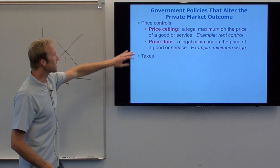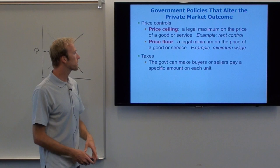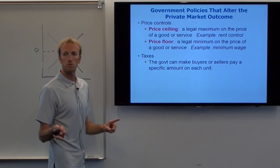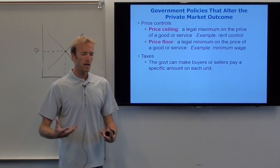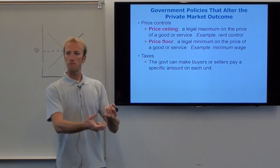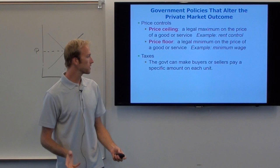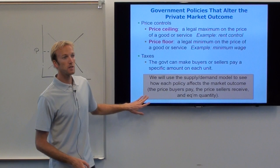The third way the government can get involved is through taxes. The government can make buyers or sellers pay a specific amount on each unit sold. If we remember back to our ShamWow example — we show up to the flea market and want to buy a ShamWow — maybe I buy it for $5, but then I have to pay like 50 cents or a dollar to the government as tax. Let's use the supply-demand model from Chapter 4 to figure out what happens with each of these three government intrusions.